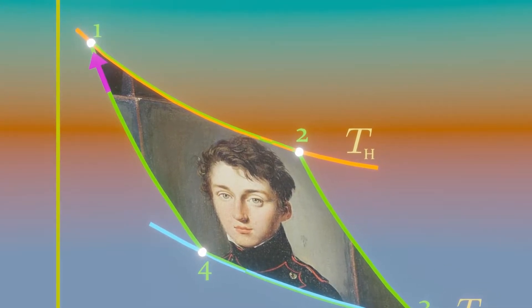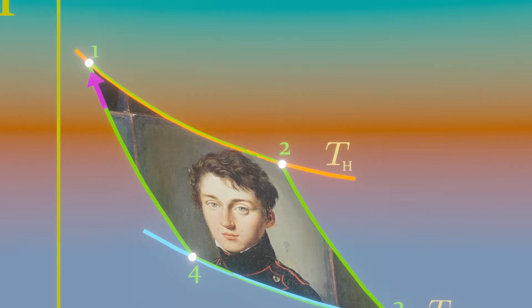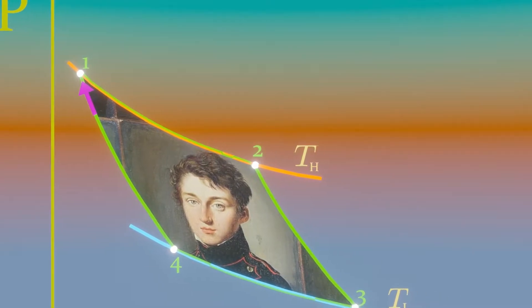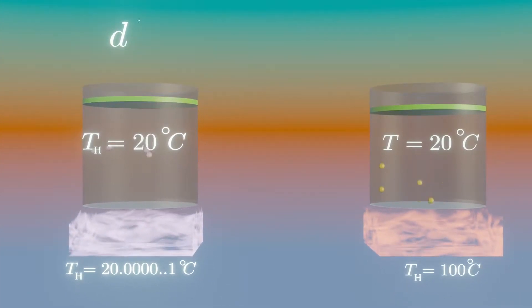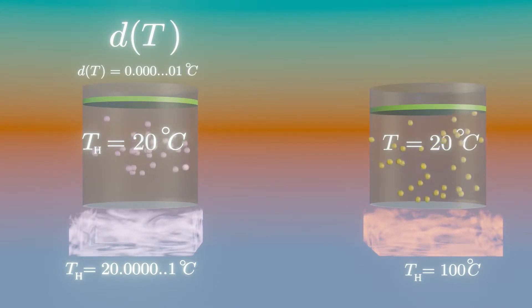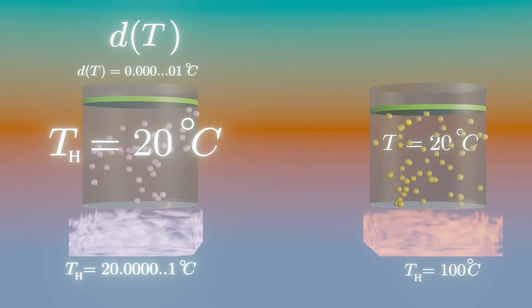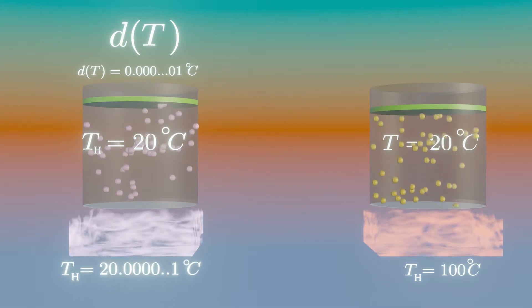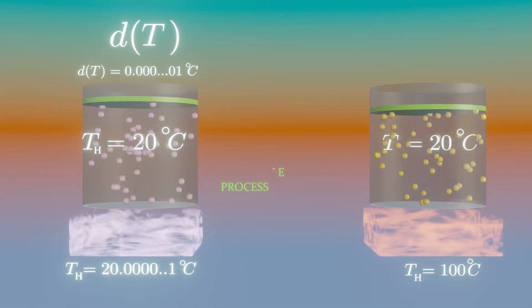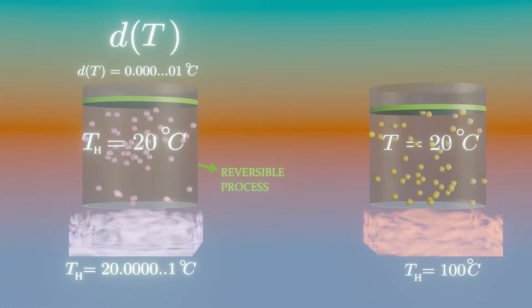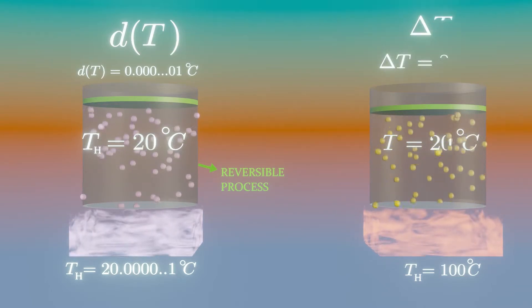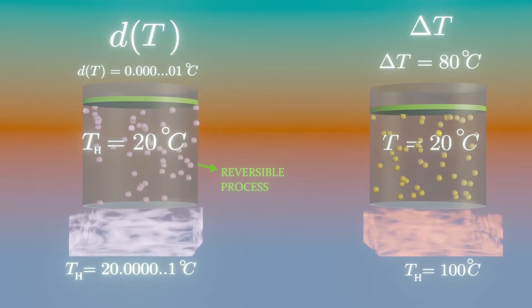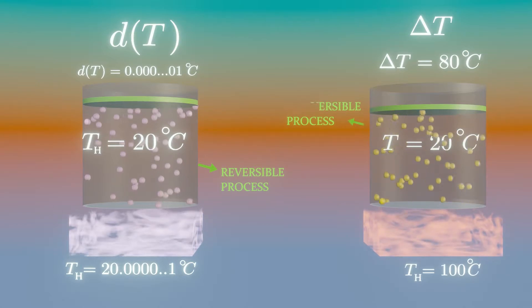An ideal Carnot cycle is totally reversible. If heat flows through an infinite temperature difference, or the temperature of both system and surrounding is nearly same, then it is a reversible process. But if the temperature difference is finite or huge, then it is an irreversible process.